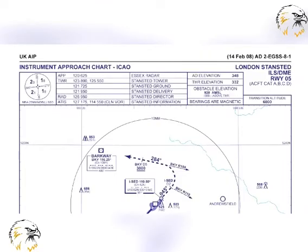Wherever possible, a straight-in approach will be specified which is aligned with the runway centreline. In the case of a non-precision approach, a straight-in approach is considered acceptable if the angle between the runway and final approach track is 30 degrees or less. If terrain restrictions preclude a straight-in approach, a circling approach will be specified.